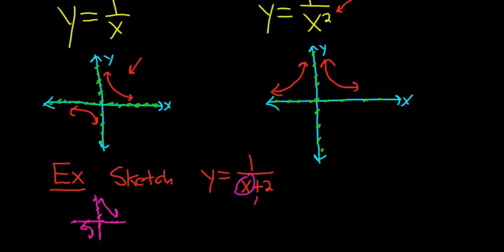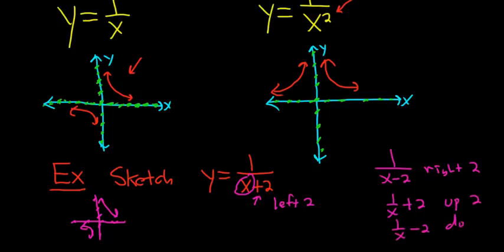When you add 2 to the x, you think it's right, but no, it's backwards - it's left 2. If you subtract from the x, it's backwards, it's right 2. If you add 2 to the entire function, it's up 2. If you subtract 2 from the entire function, it's down 2. Just showing you all the different cases. In this case, we're adding to the x, so it's left 2.